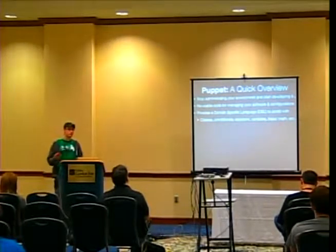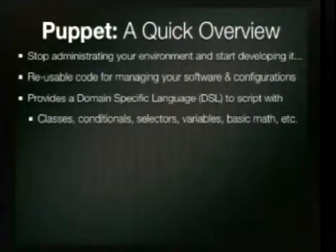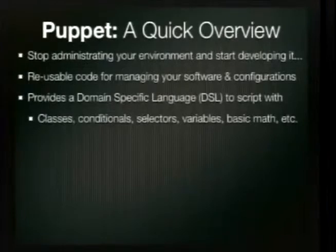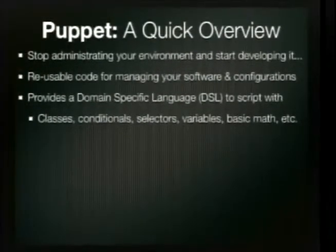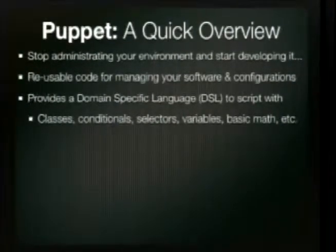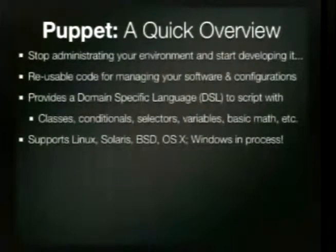A DSL is a language within another language. Ruby is the base language for Puppet, but there's a domain-specific language to actually write Puppet configuration. There are a lot of primitives — things like file, host, or computer — that you define within Puppet, not within Ruby. The learning curve for Puppet is actually pretty slim: classes, conditional selectors, variables. If you have any scripting background, this is really easy to pick up.